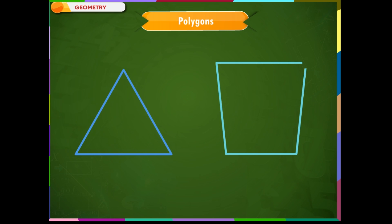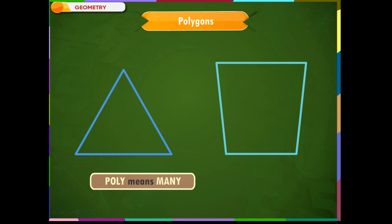A simple closed curve made of three or more line segments is called a polygon. A polygon has at least three line segments. The line segments of a polygon are named by its sides. The word 'poly' means many and 'gon' means sides, so a polygon has many sides.